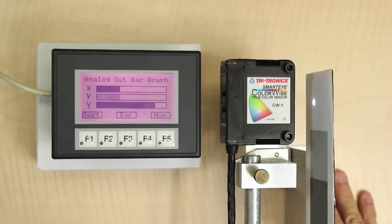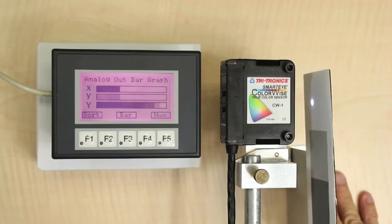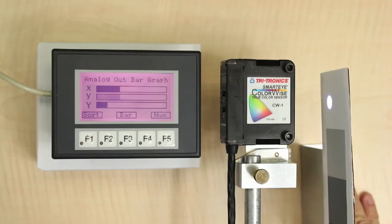We can also see that as we change the distance to the target, again, X and Y are stable, and only the intensity changes.